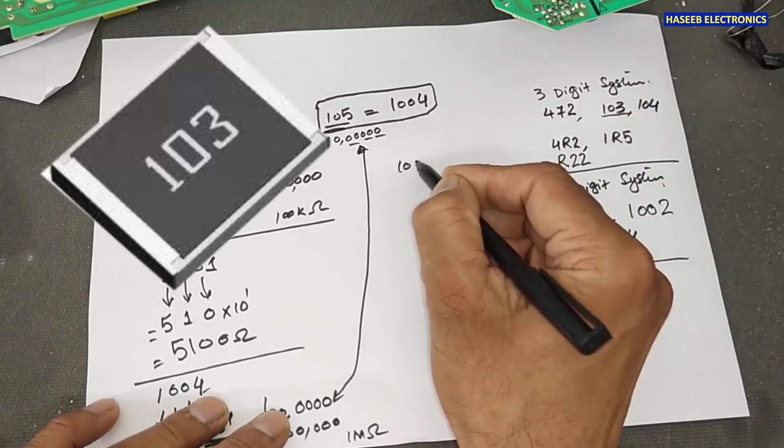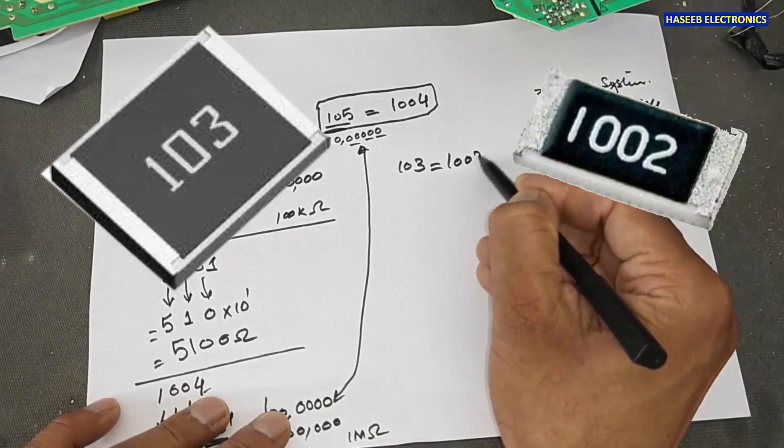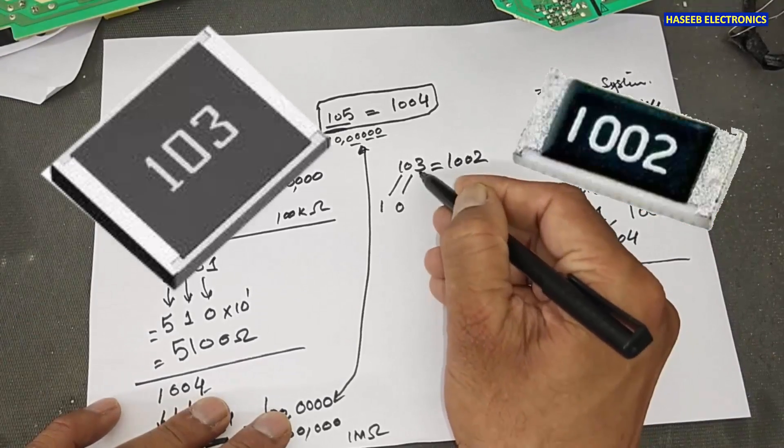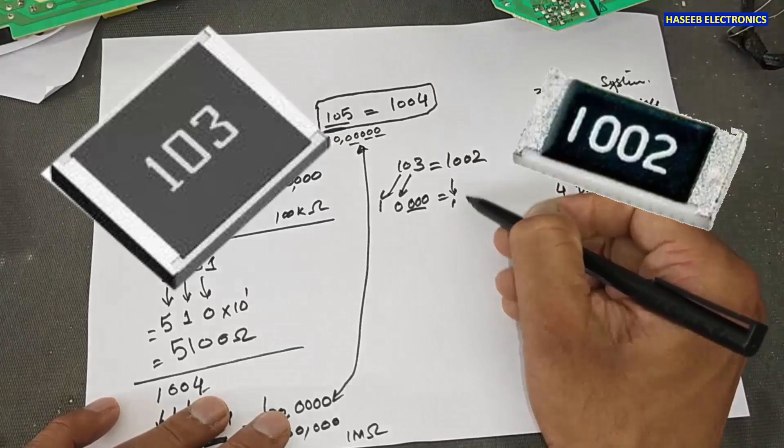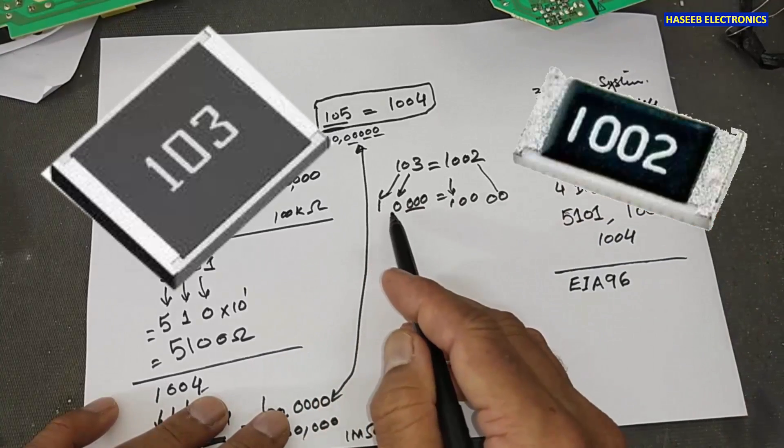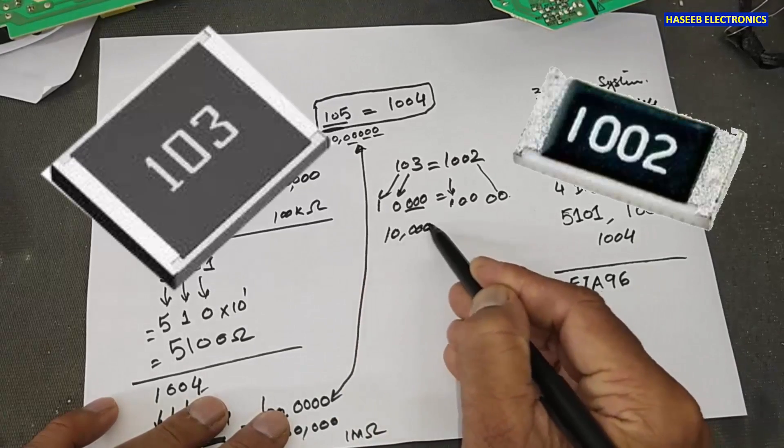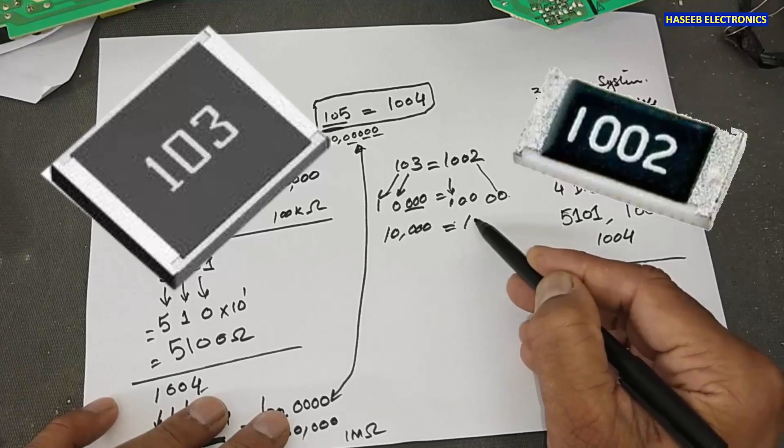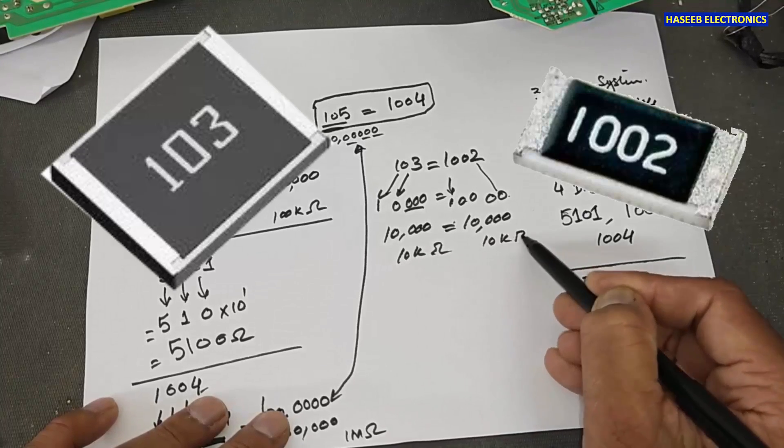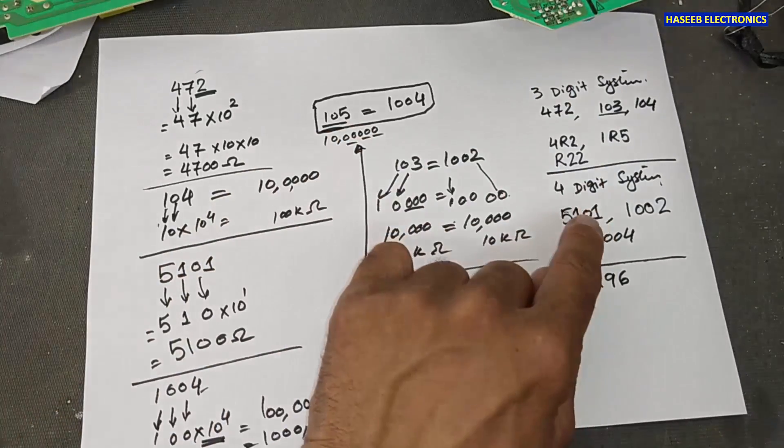Similarly, here, if we have 1, 0, 3 code, it will equal to 1, 0, 0, 2. How we can say 1, 0 and 3 zeros. 1, 0, 0 and 2 zeros. Now, we can see 1, 4 zeros, 1, 4 zeros. 1, 0, 1, 2, 3 is equal to 1, 0, 10 kiloohm. This is resistor value. This is 3 digit and this is 4 digit.